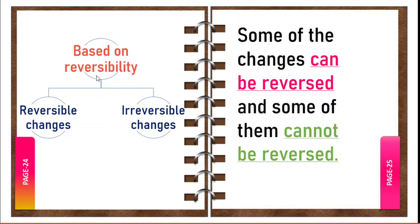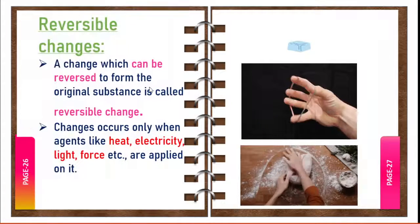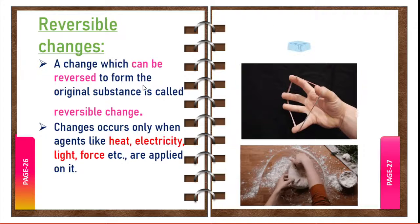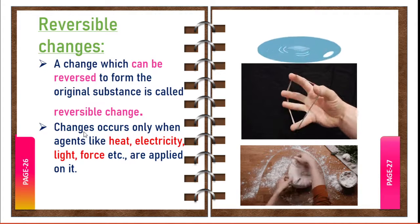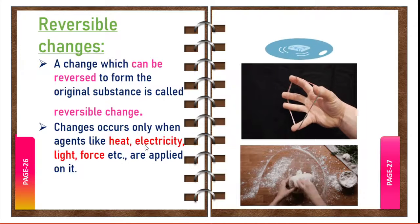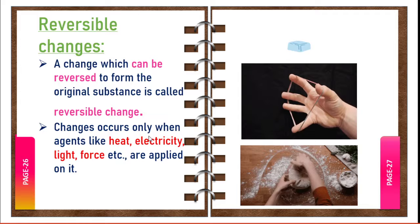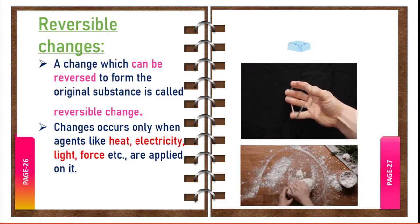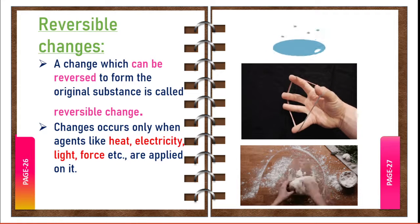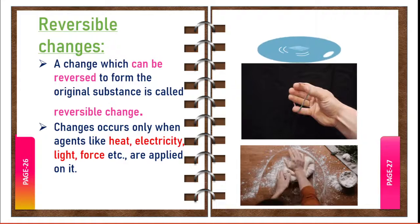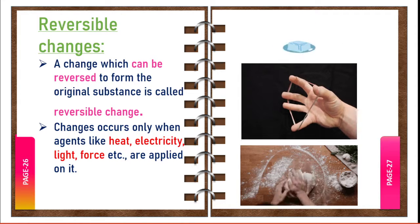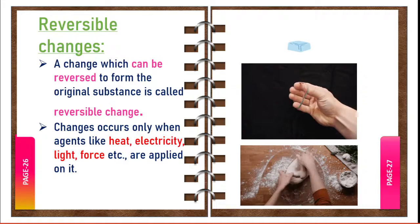We are going to discuss changes based on reversibility. Some changes can be reversed and some of them cannot be reversed. Based on reversibility, changes can be classified into two types: reversible changes and irreversible changes. A change which can be reversed to form the original substance is called a reversible change. Changes occur when agents like heat, electricity, light, or force are applied; if the agent causing the change is removed, in some cases the new substance undergoes a change in the reverse direction to form the original substance.